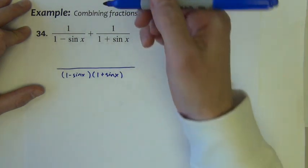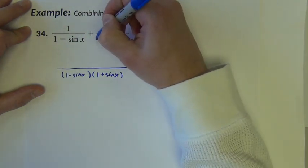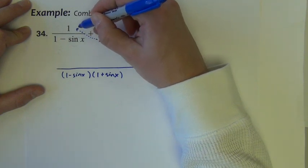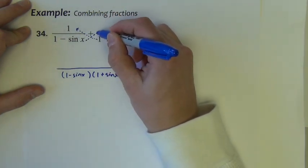The numerator, let's see, this denominator, we know from experience, goes over here. This denominator will go over here, multiplying.